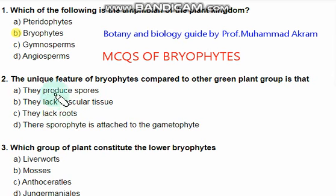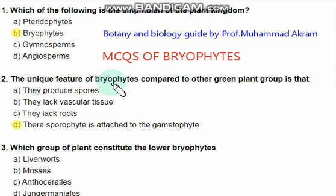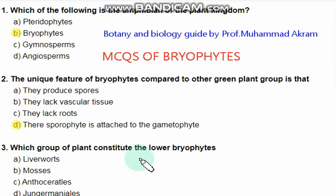Among all the options, the right answer is option D, which is that the sporophyte is attached to the gametophyte. This is the unique character of bryophytes as compared to other green plants.